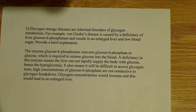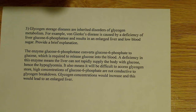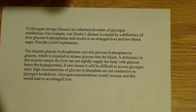For example, Von Gierke's disease is caused by a deficiency of liver glucose 6-phosphatase, which is in the gluconeogenesis pathway, and it results in an enlarged liver and low blood sugar. So why does it do that? That's basically what the question wants to know.